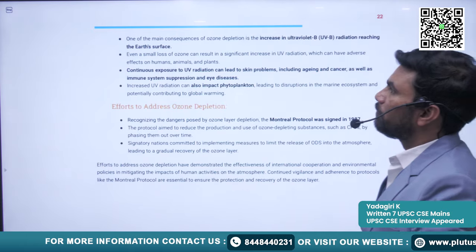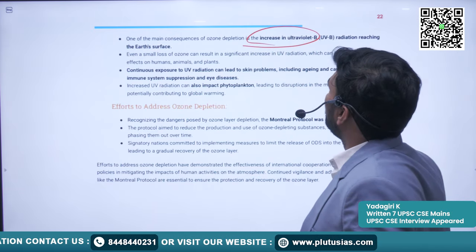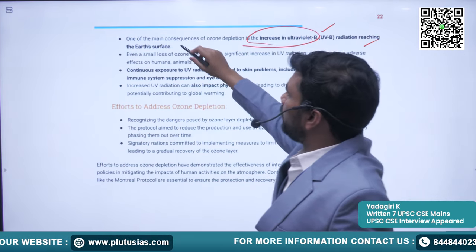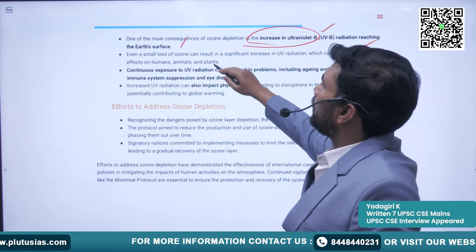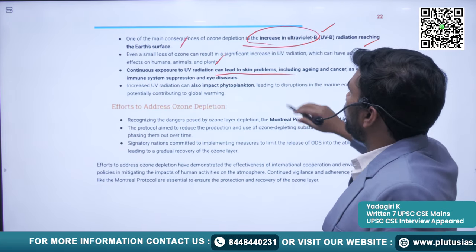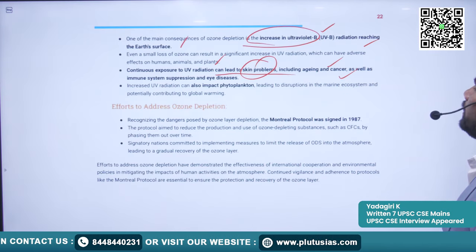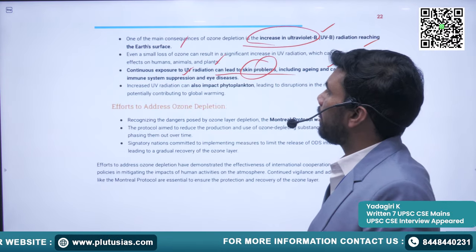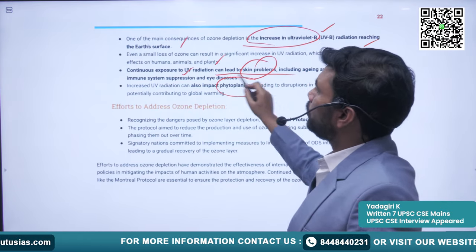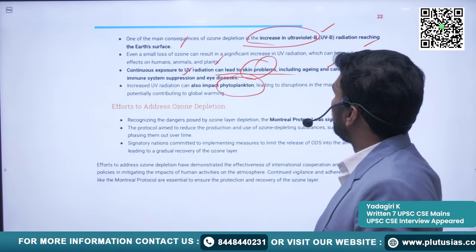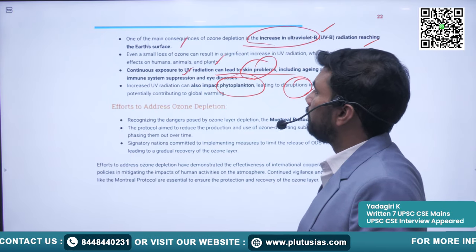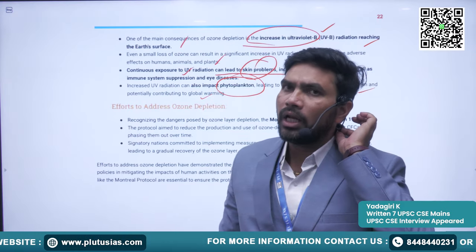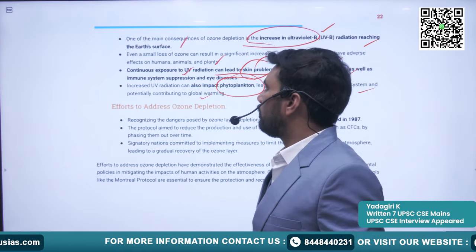Impacts of ozone depletion: one main consequence is increased UV-B radiation reaching the earth's surface. Continuous exposure to UV radiation leads to skin problems including aging and cancer, as well as immune system suppression and eye diseases. Increased UV radiation also impacts phytoplankton, disrupting marine ecosystems and potentially contributing to further global warming.